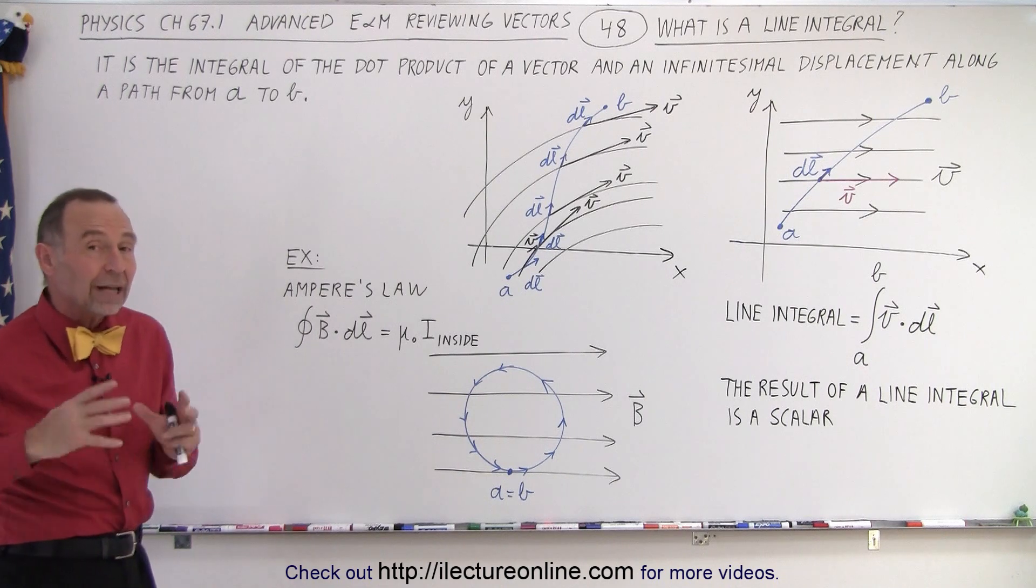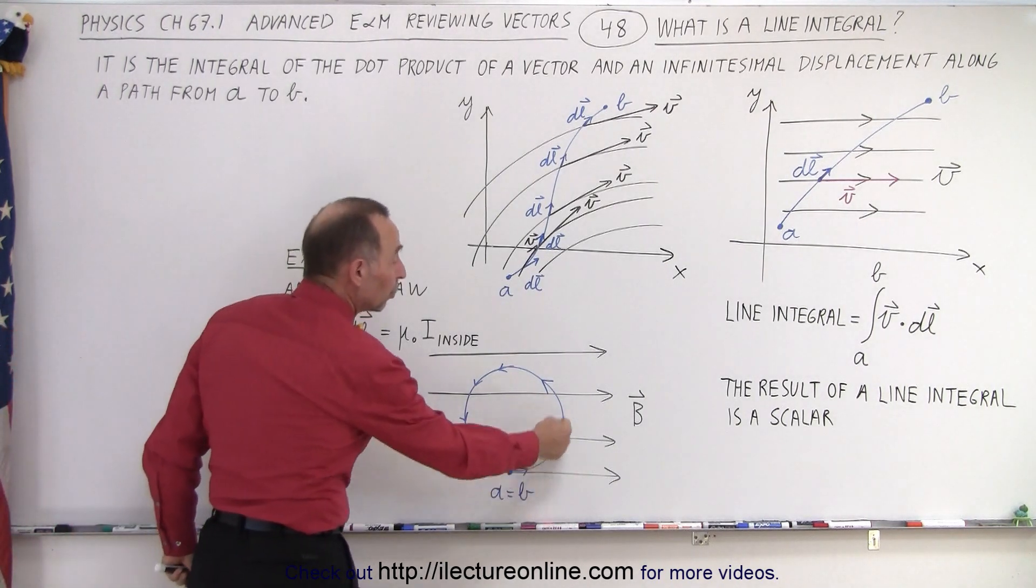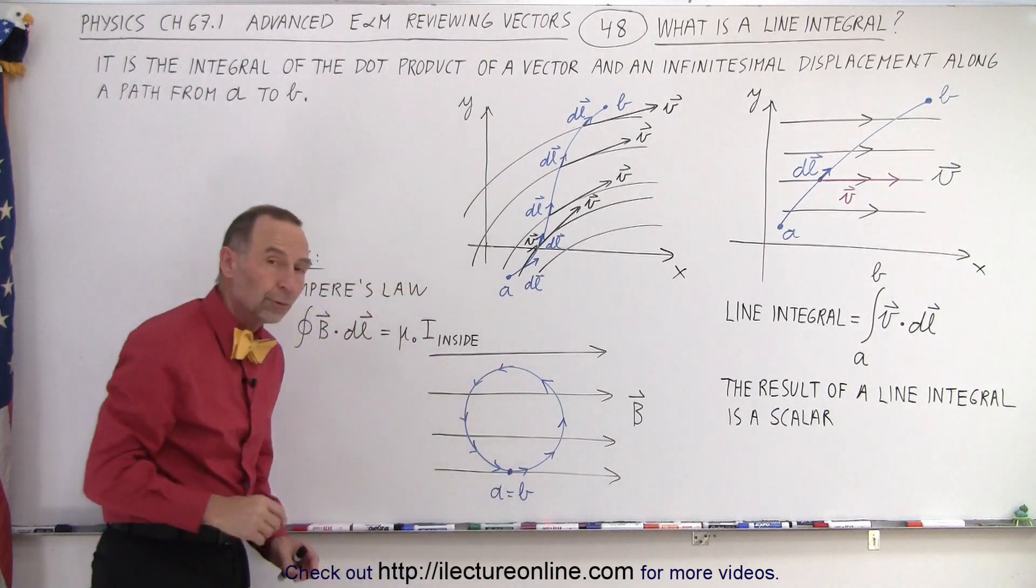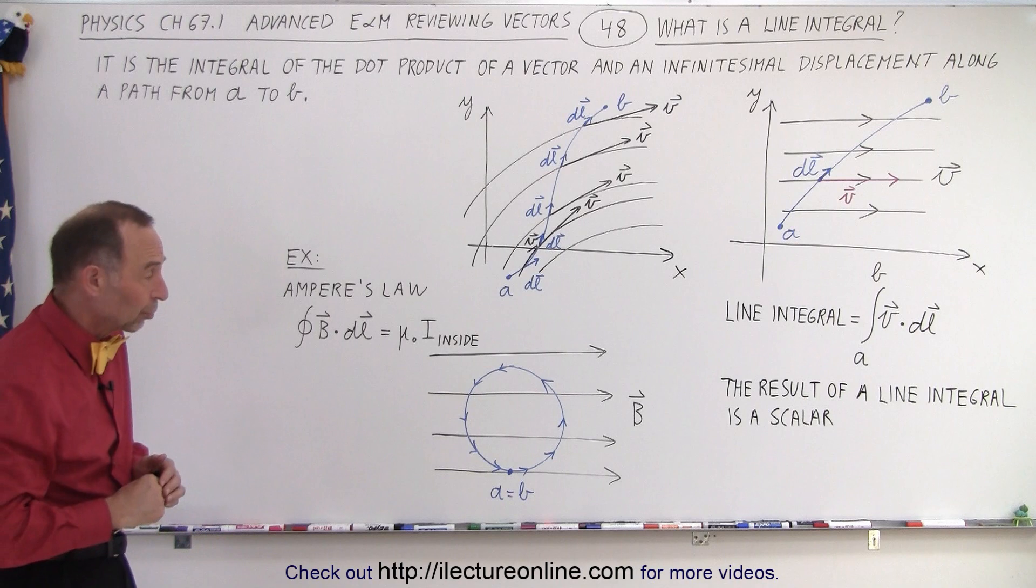So usually a current causes a magnetic field, and we can find out what the magnitude of that current is by doing a what we call a line integral through that magnetic field. So there's one example. There's many other examples we can show you.